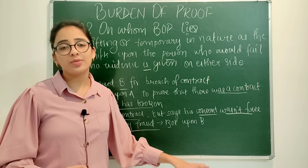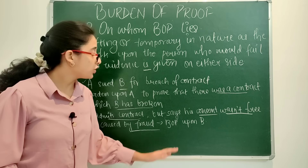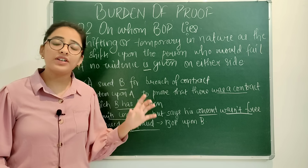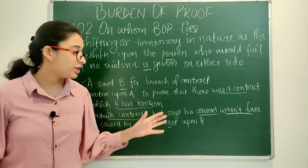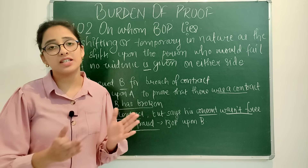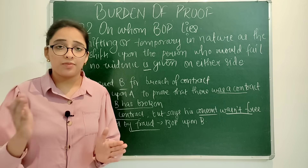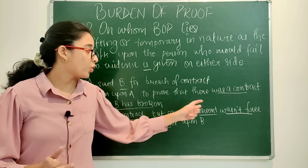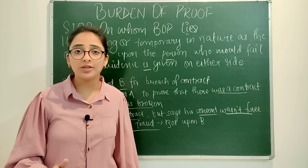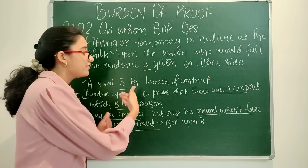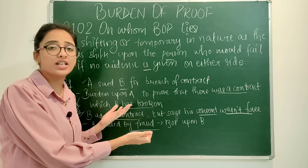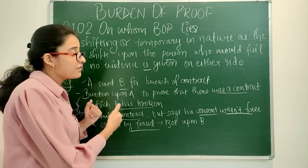If B also proves fraud, then the burden shifts to A. A now has to give evidence to prove that no fraud occurred, that no consent was vitiated for B. So the burden will lie upon A because he will lose the case if no evidence is given on either side.